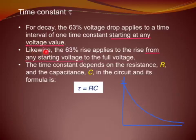And then we'll come back to the second bullet point. Likewise, the 63% rise applies to the rise from any starting voltage to the full voltage. The time constant depends on the resistance R and the capacitance C in the circuit. And the formula is tau equal to RC. Important formula to remember.